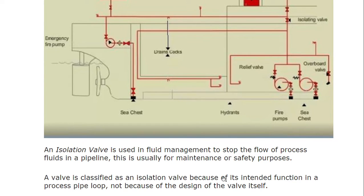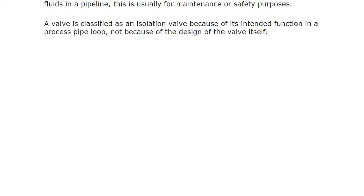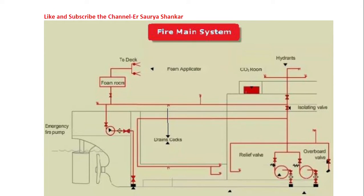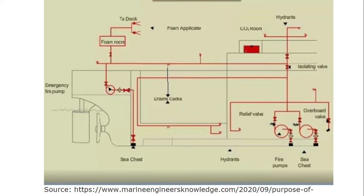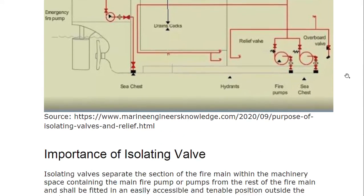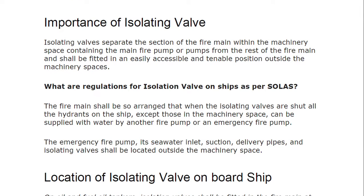The same diagram is being replicated, and you can see here that the foam system also gets supply from the fire main system. Now, the importance of isolating valves: isolating valves separate the section of the fire main within the machinery space — containing the main fire pump or pumps — from the rest of the fire main. They shall be fitted in an easily accessible and tenable position outside the machinery space. So when asked what an isolating valve is, the answer is it isolates the machinery space from the other spaces.